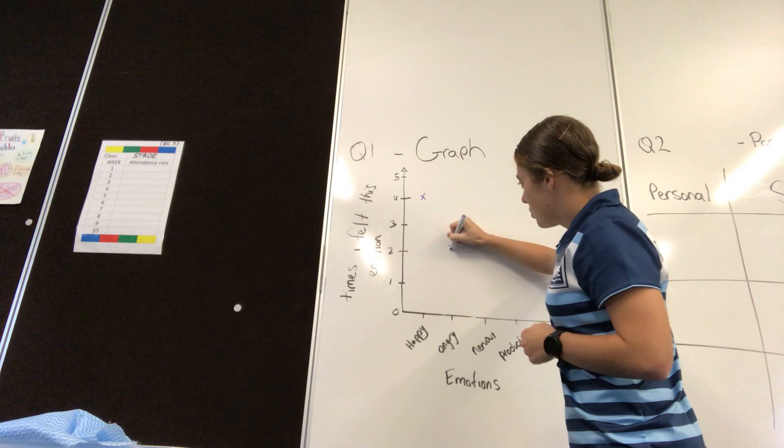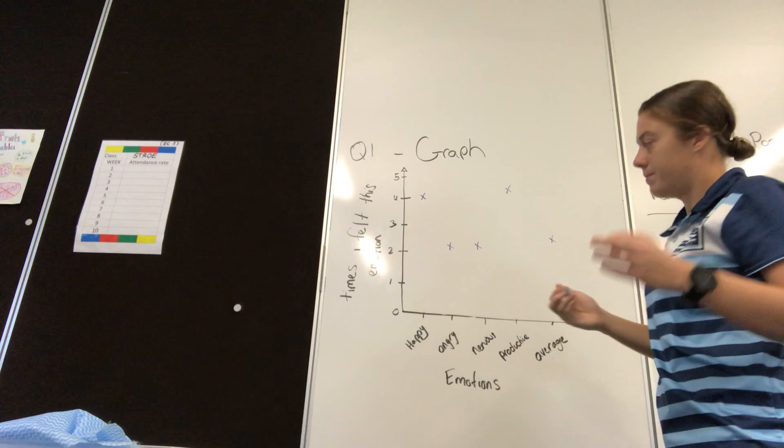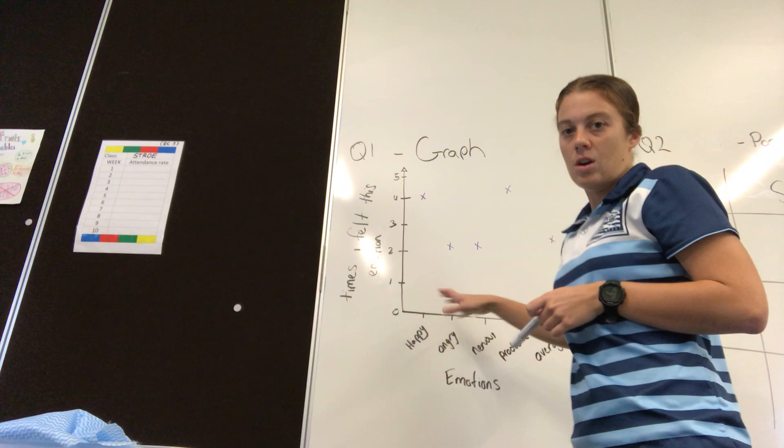Angry, twice. Nervous, twice. Productive, four times again. Simple little dots will do. You can create a bar graph or a line graph out of this — it doesn't really matter. I just want you guys to start seeing your emotions and transferring those into a concise way of showing that.